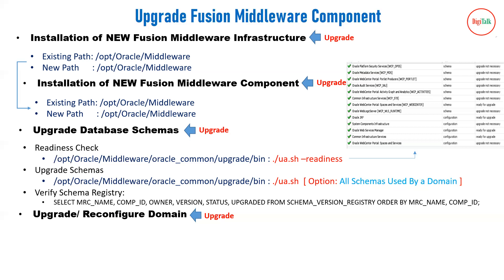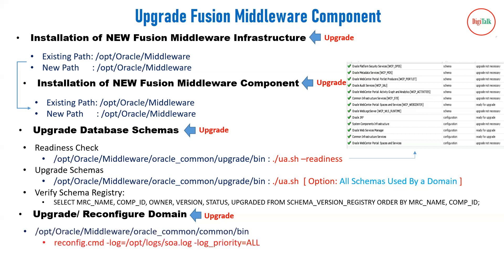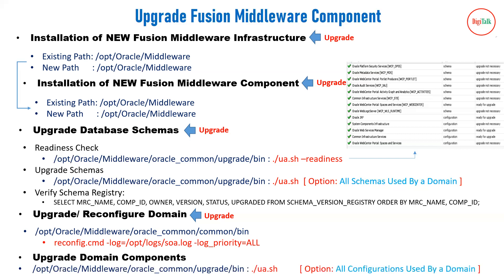After schema upgrade, you upgrade your domain through reconfiguration. Run the reconfigure.cmd or reconfigure.sh script located in the Oracle home under oracle_common/common/bin. This opens a configuration wizard where you follow the steps to upgrade your domain. The last step is upgrading your domain components using ua.sh again — but this time select 'all configurations used by a domain' instead of 'all schemas used by the domain'. Finally, start and test your services.